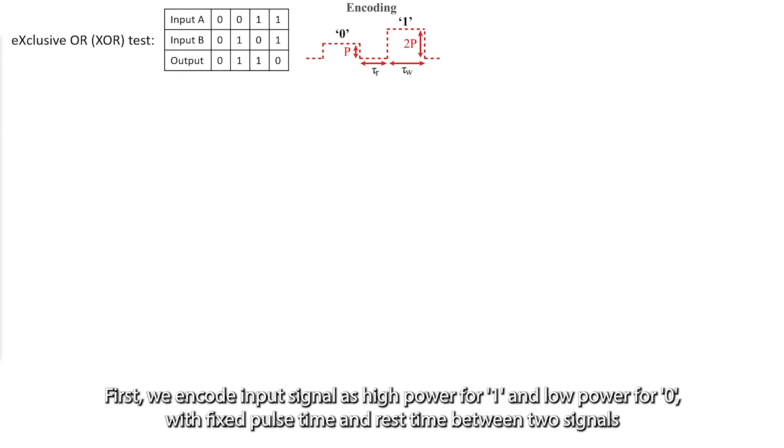For example, we can perform basic exclusive OR tests which require memories from the previous input. First, we encode input signal as high power for 1 and low power for 0, with fixed pulse time and rest time between two signals.